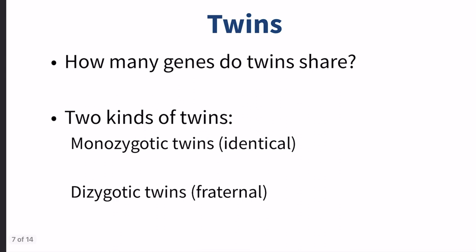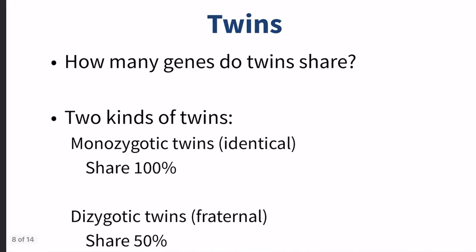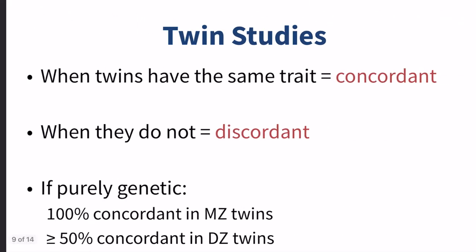What about twins — how many genes do twins share? Monozygotic twins are identical, so they share 100% of their genes. Dizygotic twins are similar to a typical sibling pair, so they're going to share about 50%. This is going to help us use twin studies to figure out if traits are genetic or not.